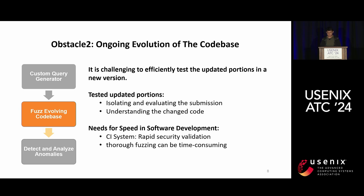The second obstacle is the ongoing evolution of the codebase, which creates difficulties for continuous testing. It is challenging to efficiently test updated portions when a new code commit is applied. The challenge lies in isolating and evaluating the security impact of a commit within the broader application context, and understanding the exact triggers, inputs, and code paths affected by new code can be complex, especially in software ecosystems with numerous dependencies.